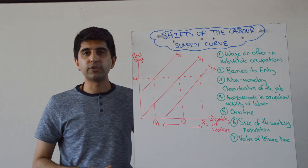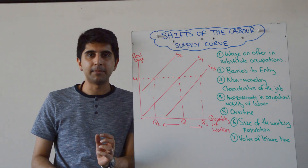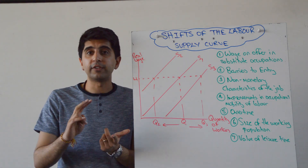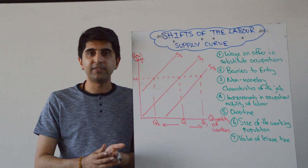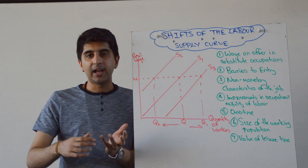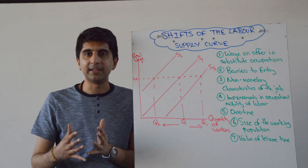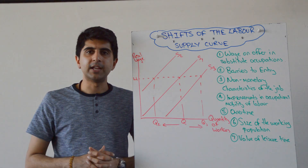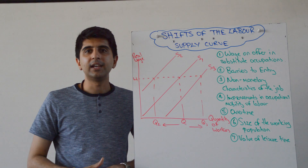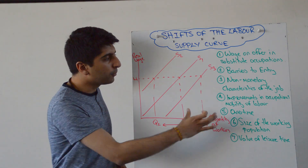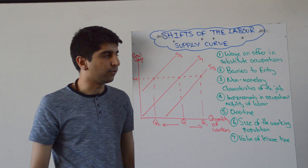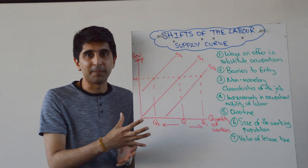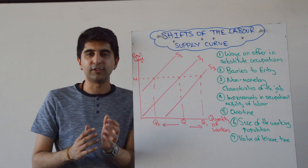Non-monetary characteristics of the job are really important in determining labour supply. Think of things like health care funding, education-related benefits, a good pension plan, the ability to work overseas or get a promotion, working hours, the time of day you're working, the kind of breaks you get, whether you get a company car — all of these things. The more benefits there are in terms of non-monetary characteristics, the more you can expect supply to shift to the right.